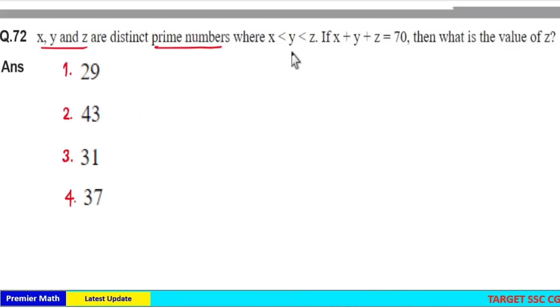x, y and z are distinct prime numbers where x less than y less than z. If x plus y plus z is 70, then what is the value of z?